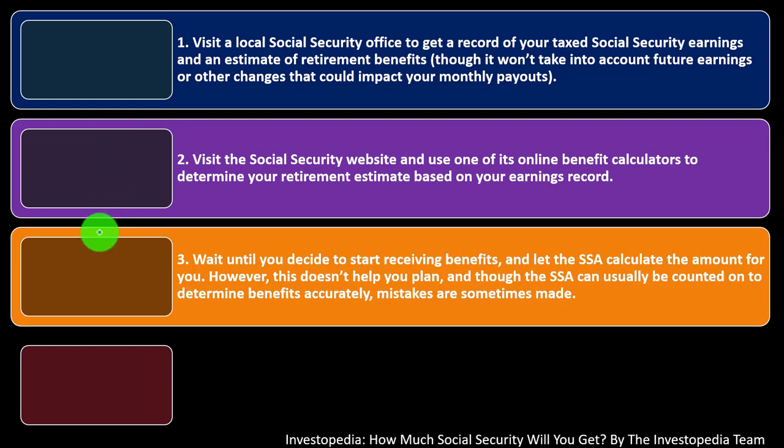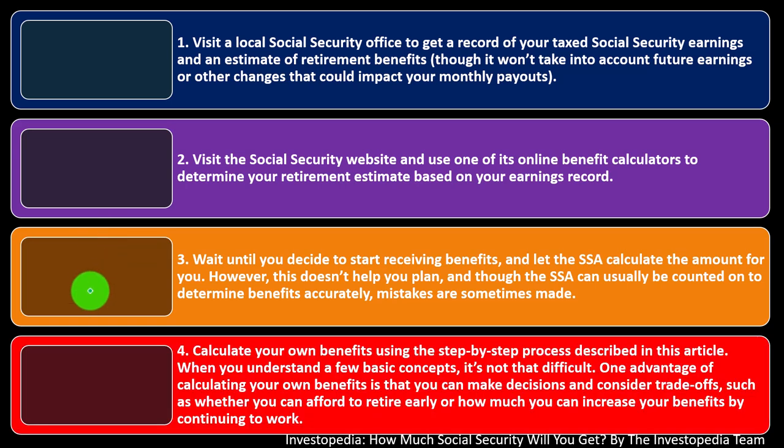Number three: wait until you decide to start receiving benefits and let the SSA calculate the amount for you. However, this doesn't help you plan. And though the SSA can usually be counted on to determine benefits accurately, mistakes are sometimes made. So you may want to double-check their calculations, and for planning purposes you need to do the calculations yourself if you're trying to project what's going to happen going forward.